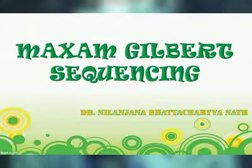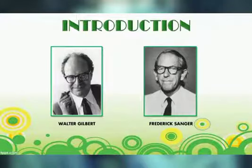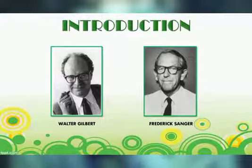Hello everyone, I am Dr. Neelanjana Bhattacharyanath from Swami Vivekananda Institute of Modern Science. Today's topic is Maxim-Gilbert Sequencing. Basically in the mid 1970s, two methods were developed for directly sequencing DNA: one is Maxim-Gilbert Sequencing, also known as the Chemical Sequencing Method, and the other is the Sanger Chain Termination Method. In the year 1980, both Walter Gilbert and Frederick Sanger were awarded the Nobel Prize in Chemistry for their contributions concerning the determination of base sequences in nucleic acids.